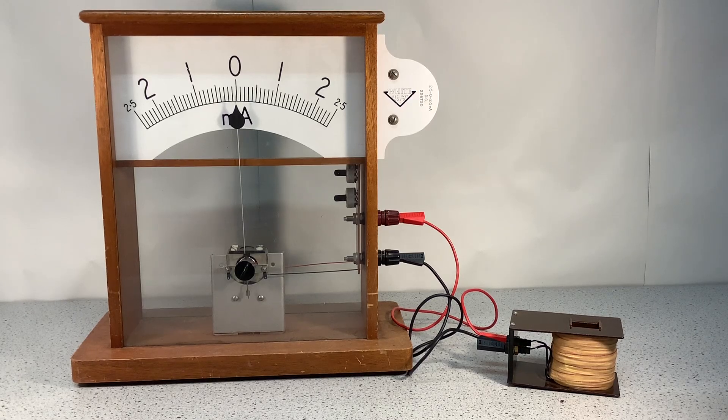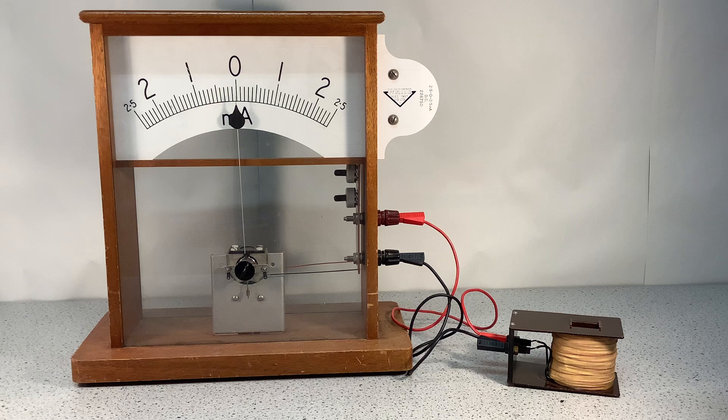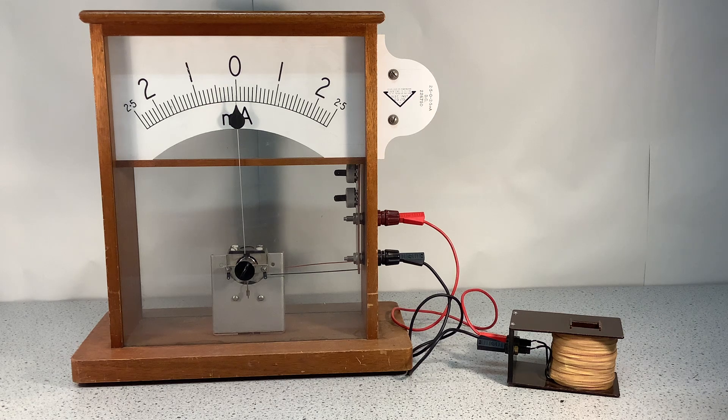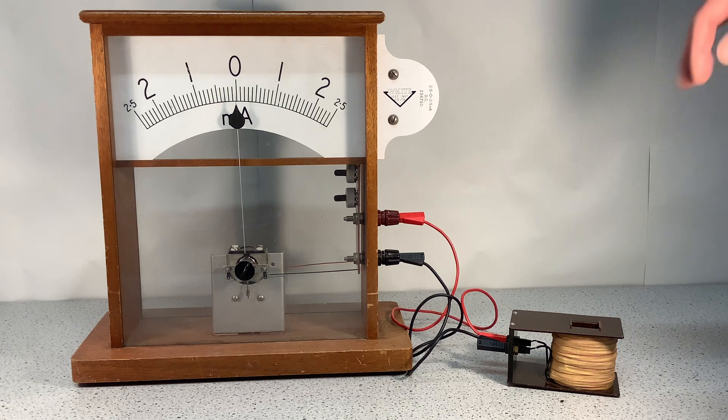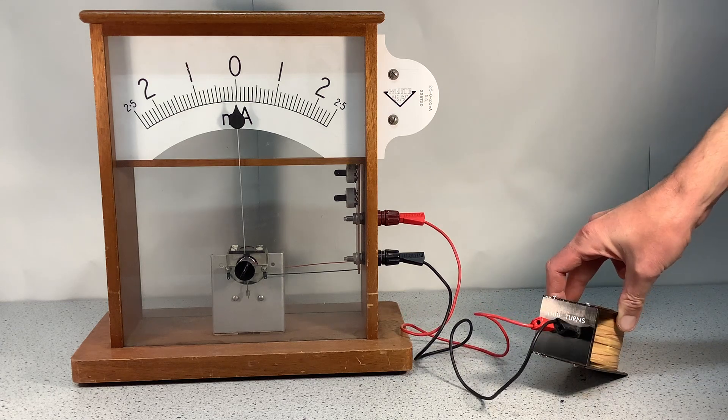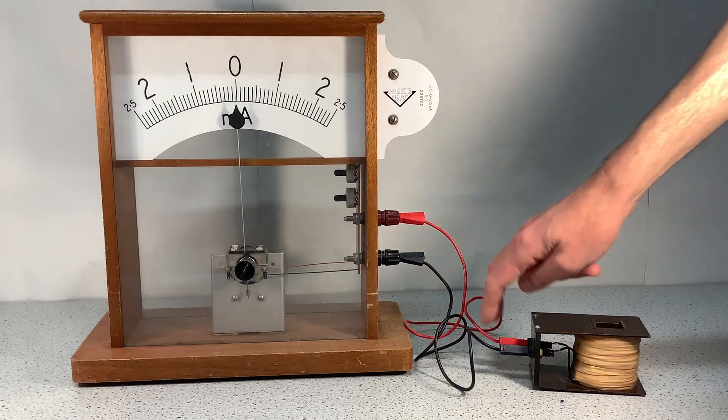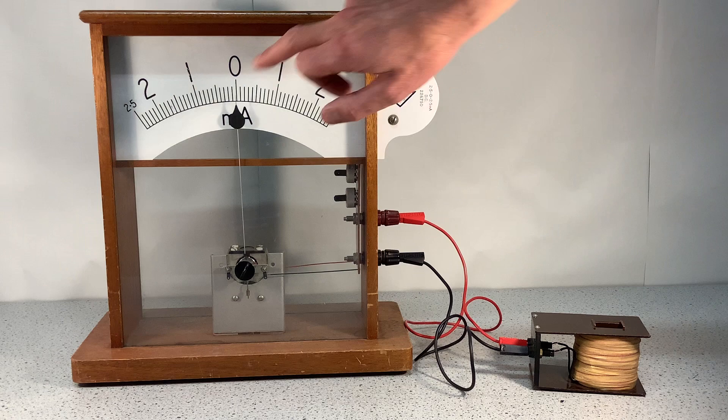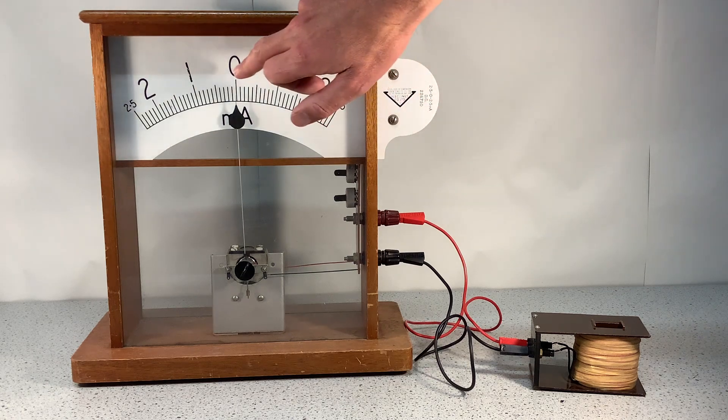We're now going to have a look at the basic demonstration of electromagnetic induction or the generator effect. I've got a very simple setup here. I've got a coil which has got 1100 turns and the coil is connected to this milliamp ammeter which can read negative or positive values.